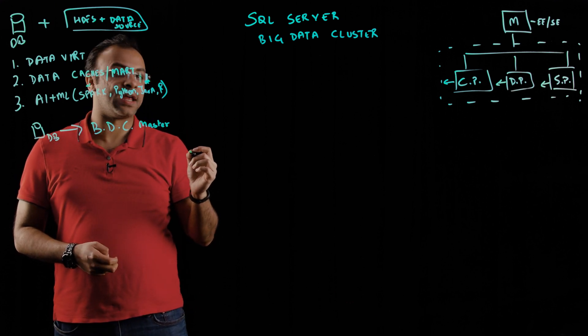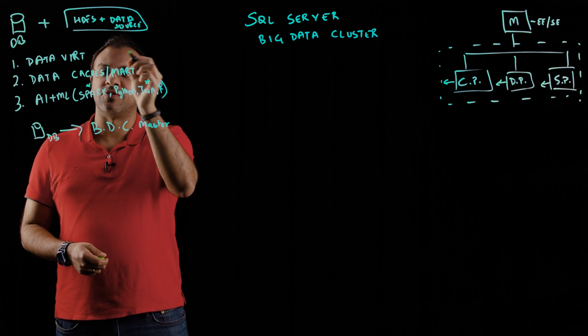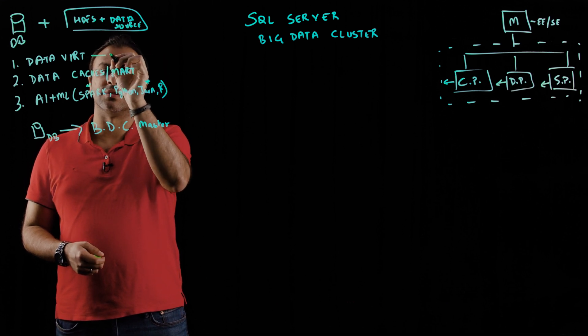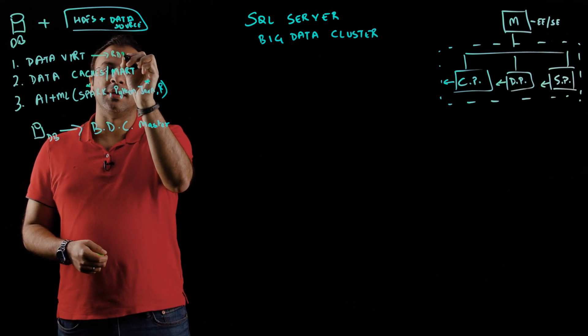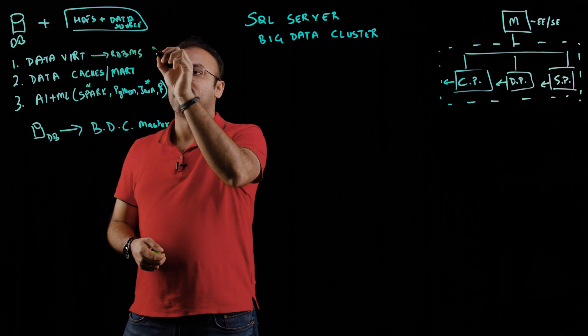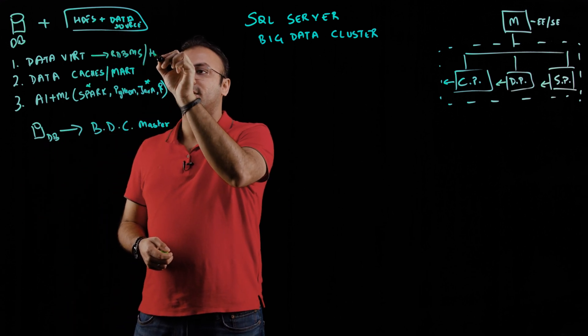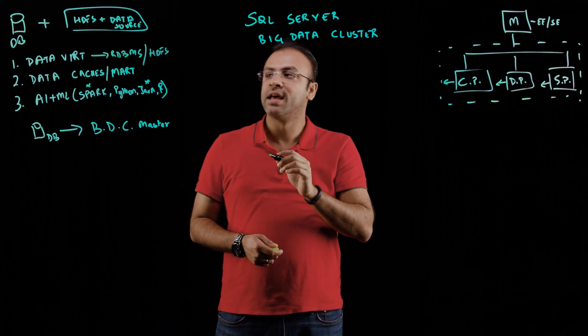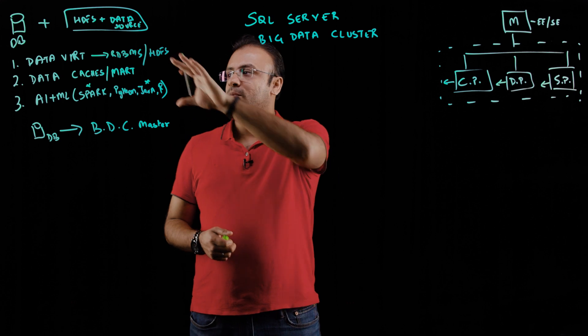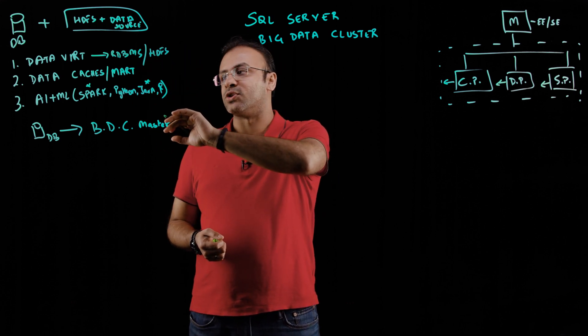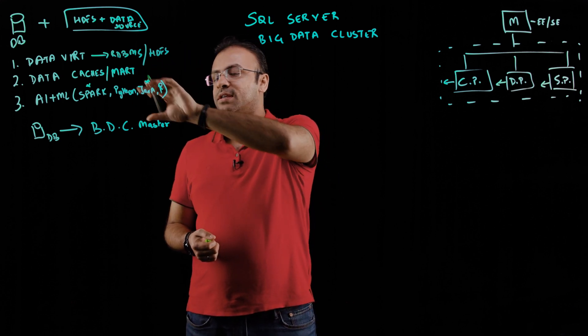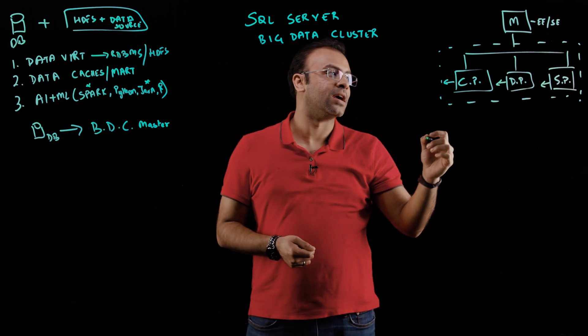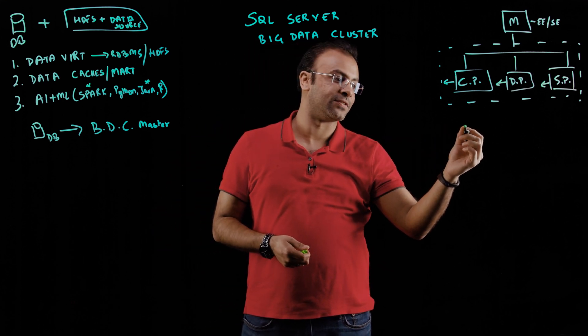You can also use data virtualization to read from external data sources. If you have another RDBMS or another HDFS source sitting in your enterprise environment, you can pull data from these and read from that. This gives you a bunch of different business scenarios you can enable with SQL Server 2019 Big Data Cluster. Now, the question comes in, how do you actually license for these?